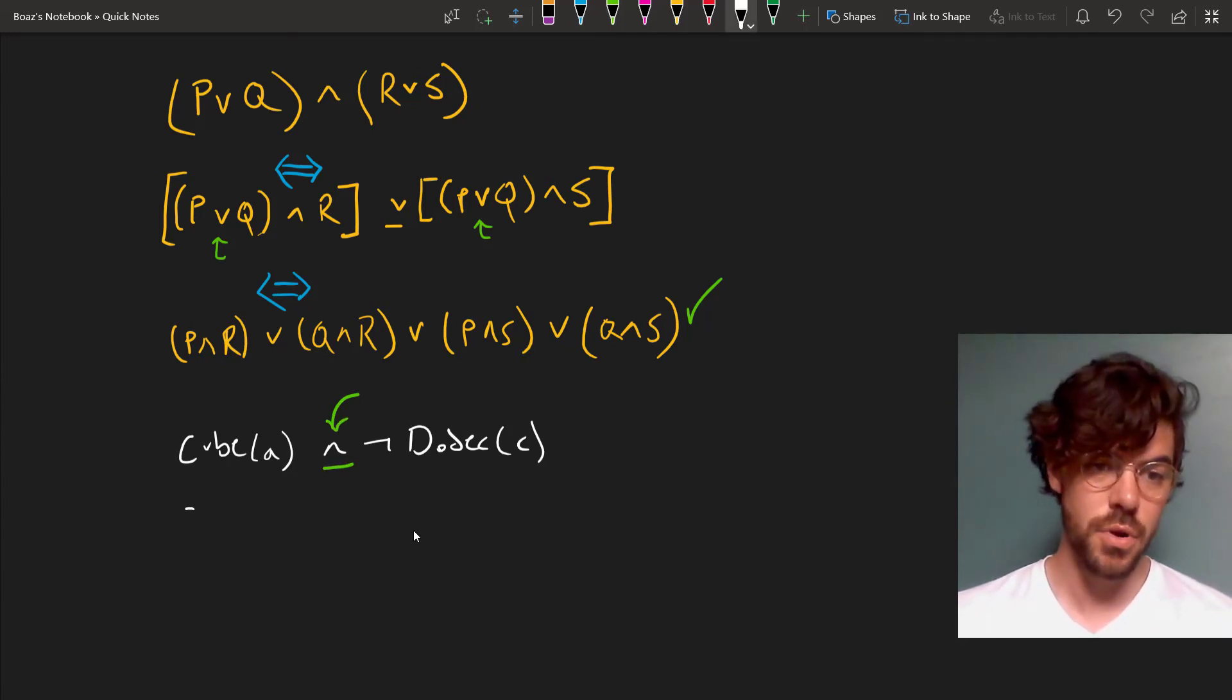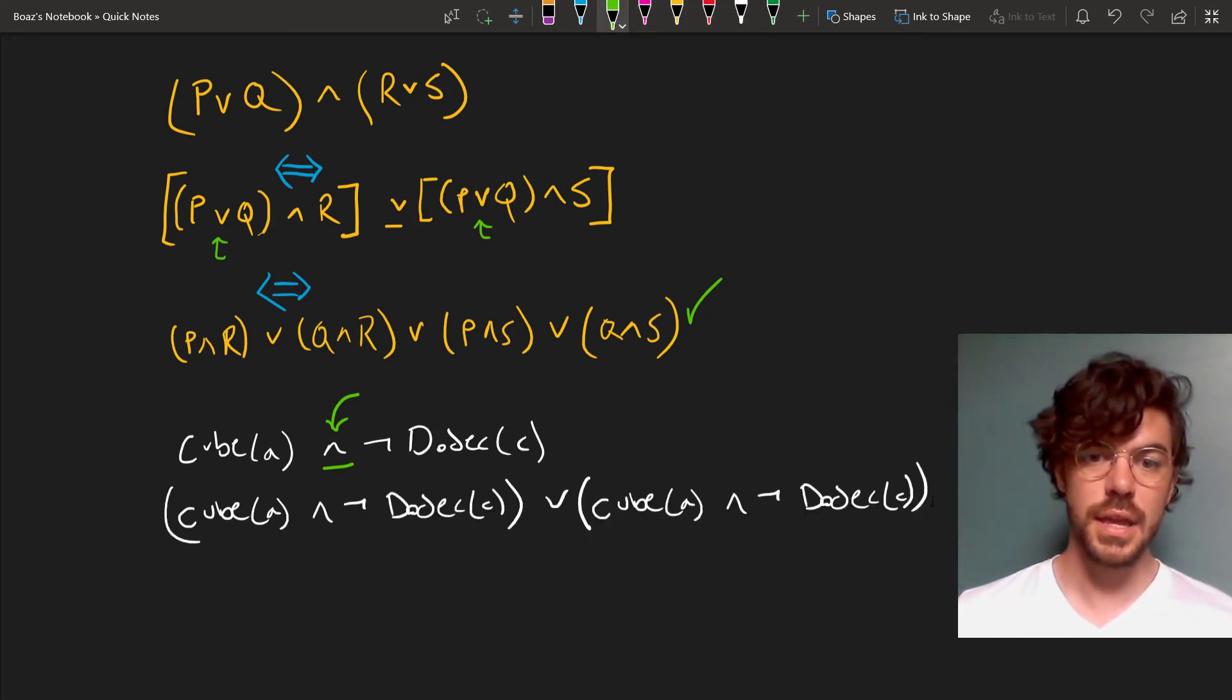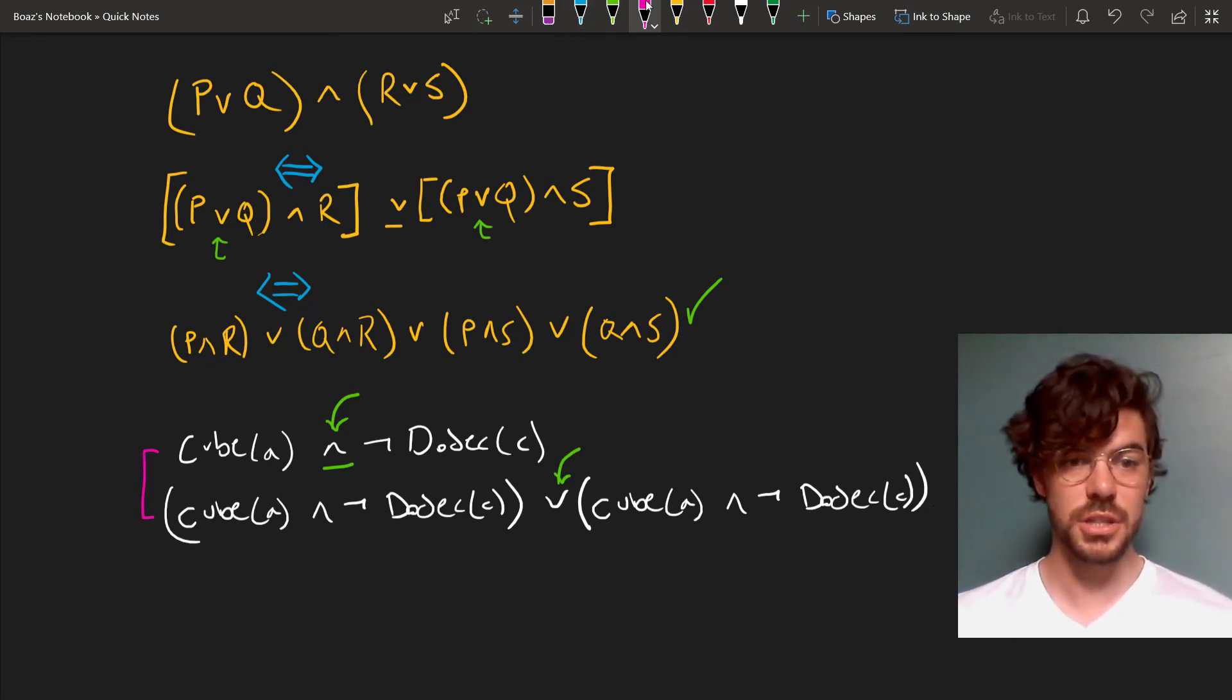But it's also in disjunctive normal form. This sentence is a disjunction of a pair of conjunctions. So this itself is in disjunctive normal form. This whole sentence is in both conjunctive normal form and disjunctive normal form, simply because every sentence p is equivalent with p or p.